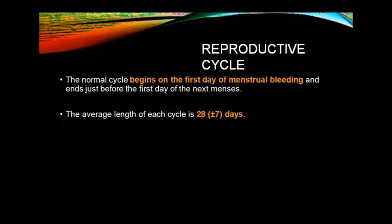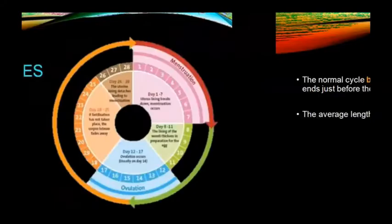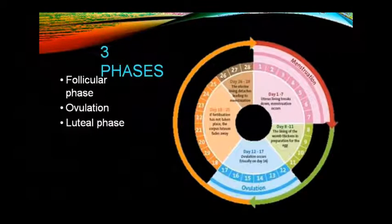The reproductive cycle is a normal cycle that starts from the first day of menstrual bleeding and ends just before the first day of the next menses. Its average length is 28 days, with plus or minus 2 days considered normal, and 5–7 days variation is also largely considered normal. This menstrual cycle has 3 phases: follicular phase, ovulation, and luteal phase.